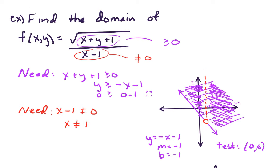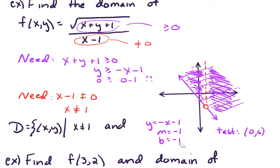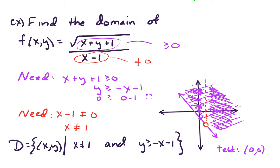To summarize, the domain D equals the set of (x, y) points such that x is not equal to 1 and y is greater than or equal to negative x minus 1. You can state the domain in set-builder notation, and we have a good picture of it as well.